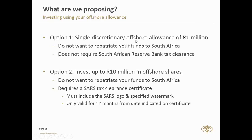This option is for those who don't want to repatriate money back to South Africa. Option one — using the offshore allowance — does not require a tax clearance from the Reserve Bank. You're allowed to take a million Rand offshore every year without getting tax clearance. If you want to take more than that, you can invest up to 10 million in offshore shares — but for this option, your objective should not be to repatriate funds soon, and it does require a SARS tax clearance certificate with a SARS logo and a specified watermark.